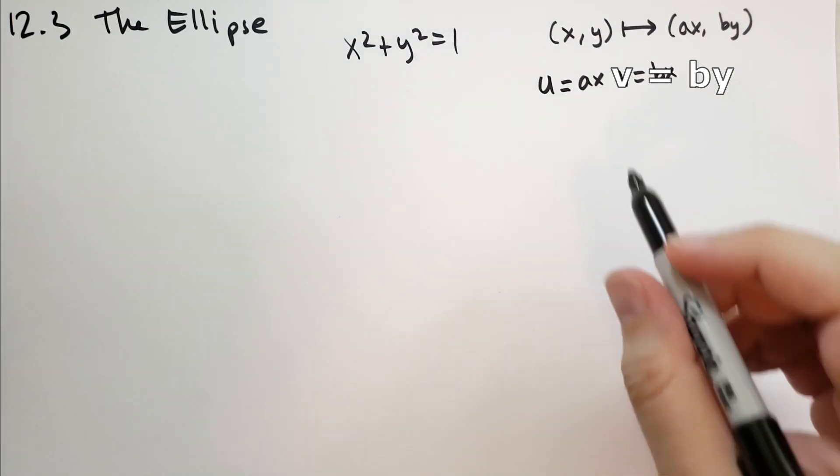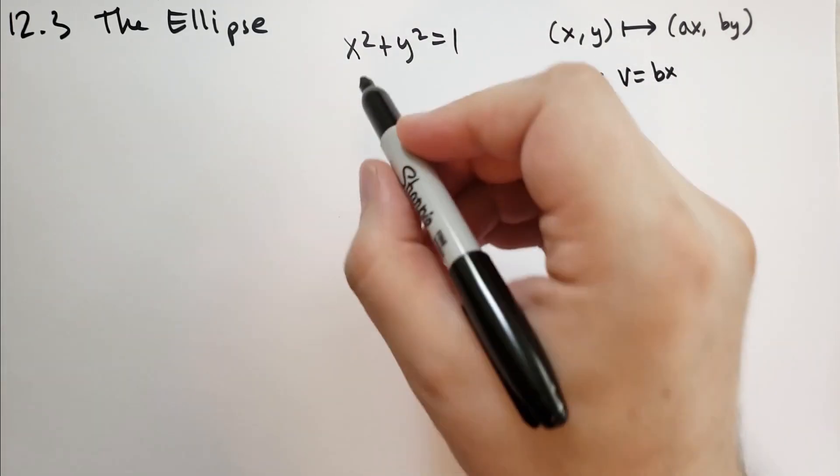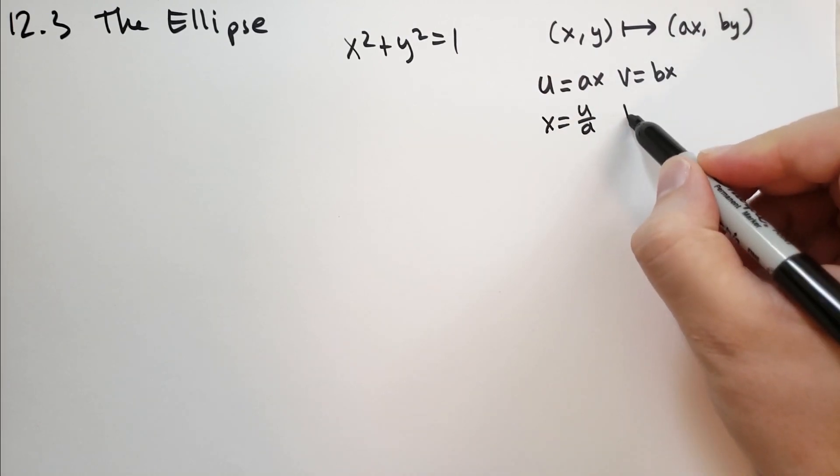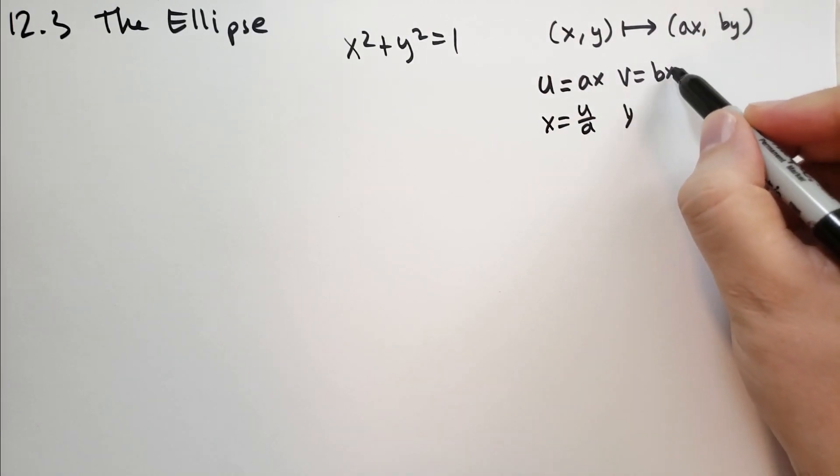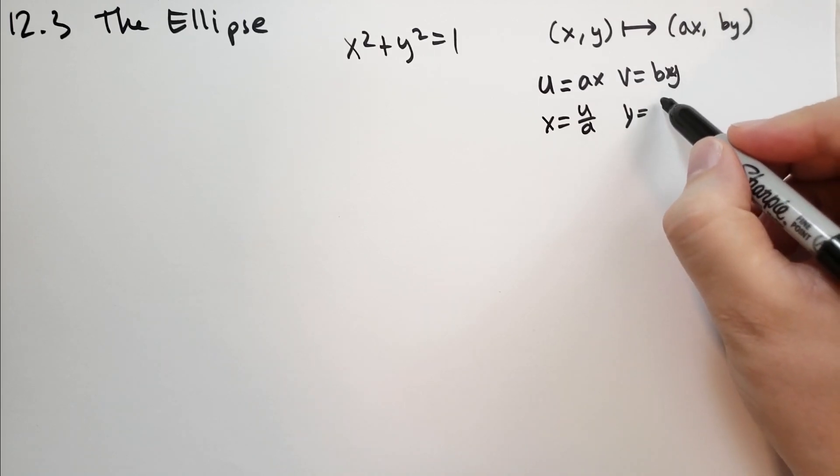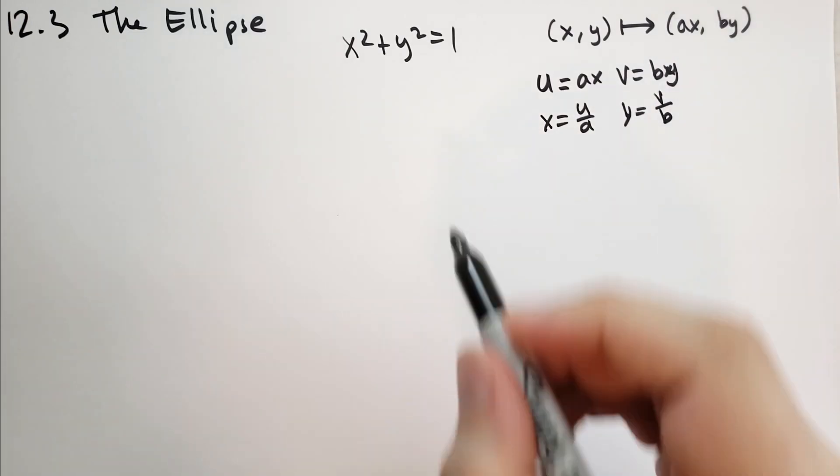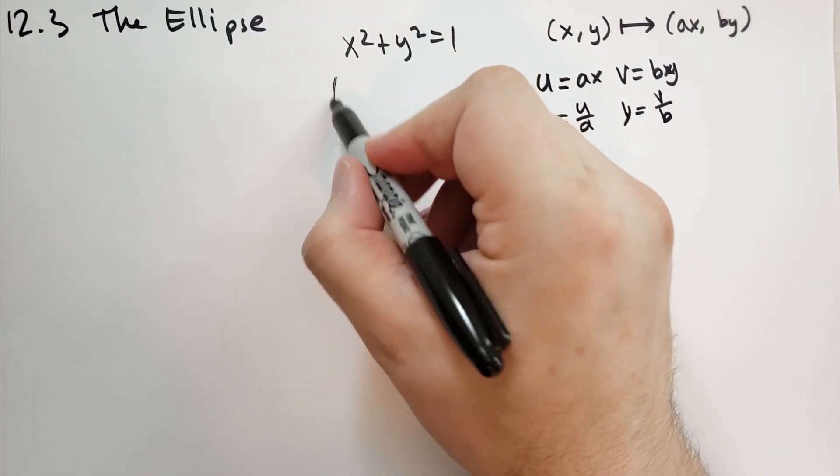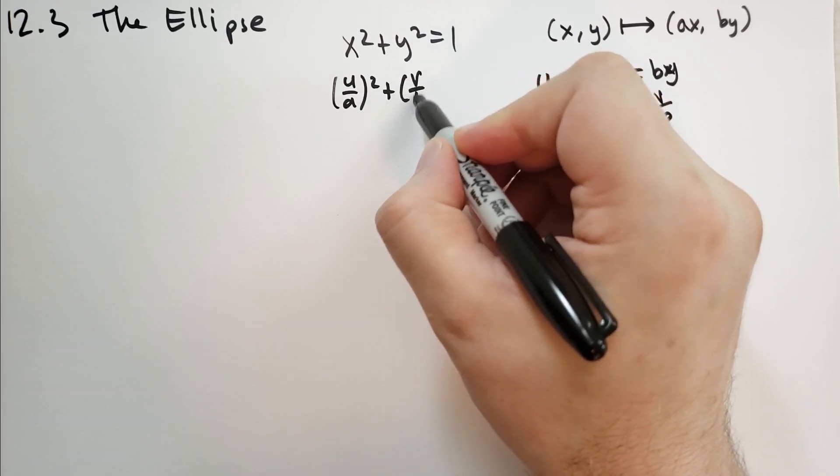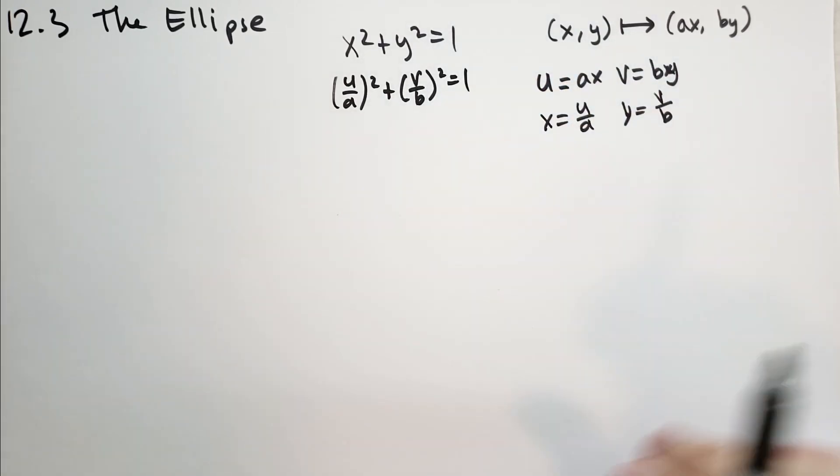And then he says note that u, v still satisfy that equation because x is equal to u over a and y is equal to v over b. So we can plug these two in. So we get u over a squared plus v over b squared is equal to 1.